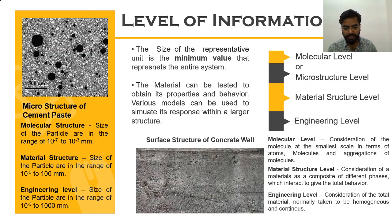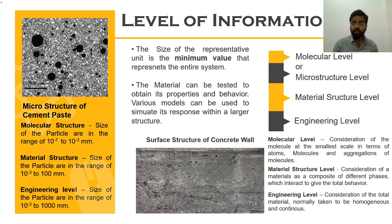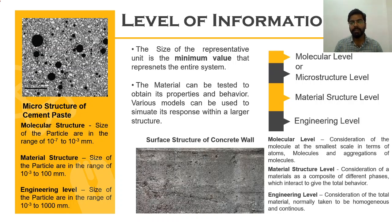The second is the material structure level — looking at the surface structure of a concrete wall through the naked eye. You can see patches, aggregate, mortar, and the colour of the material. This is the consideration of a material as a composite of different phases which interact to give the total behaviour. In civil engineering, you mostly use composite materials rather than pure single-phase materials.